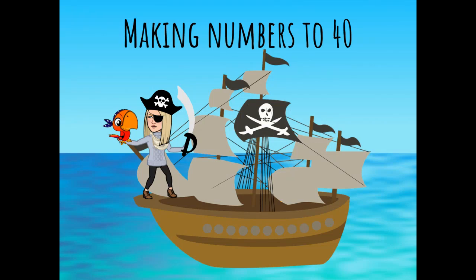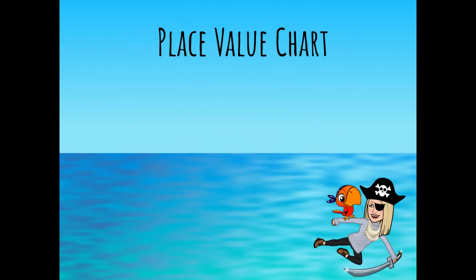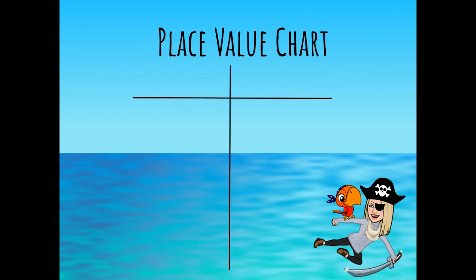Hey first grade, today we are going to continue our study of numbers to 40. We learned how to write and spell our numbers to 40 in the last lesson, but today we're going to build those numbers using tens and ones. So let's start with our place value chart. You will recognize this chart because we used it in the classroom to make numbers to 20. It starts with a cross, and then you label it tens on the left and ones on the right.